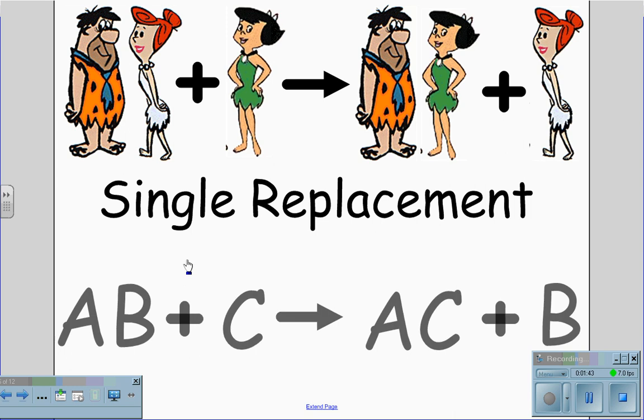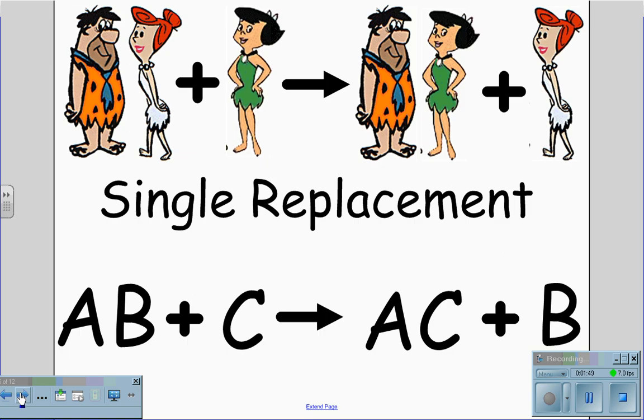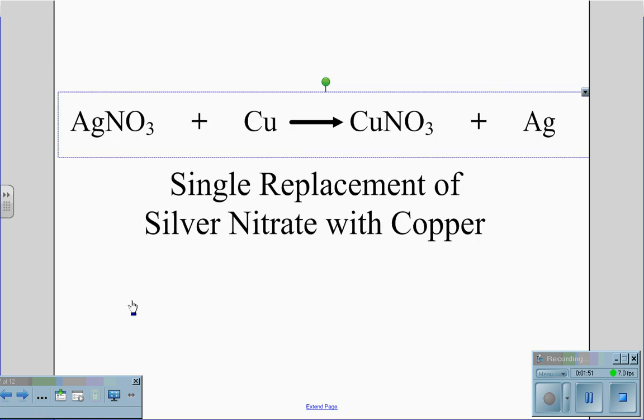So AB plus C gives AC plus B. We are replacing one part of the compound. This is called single replacement and this happens when silver nitrate combines with copper to create copper nitrate and release silver.